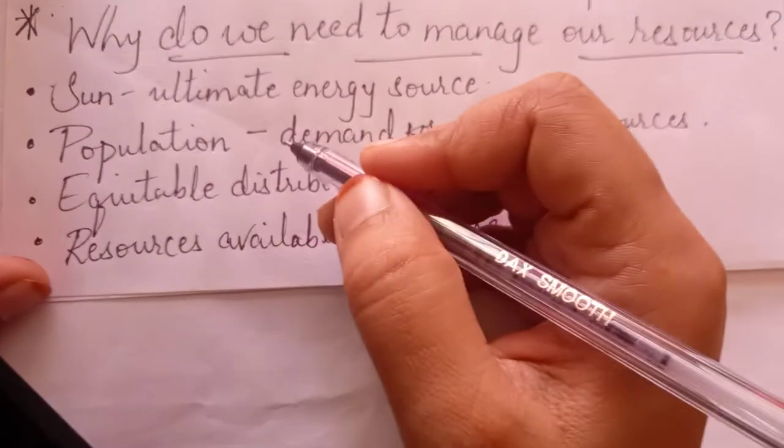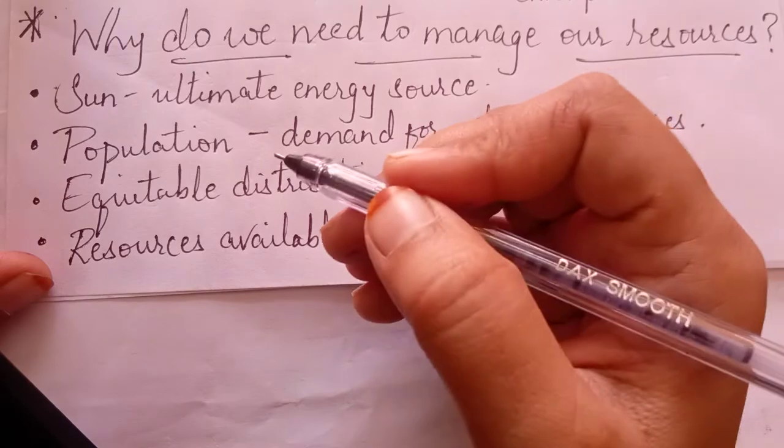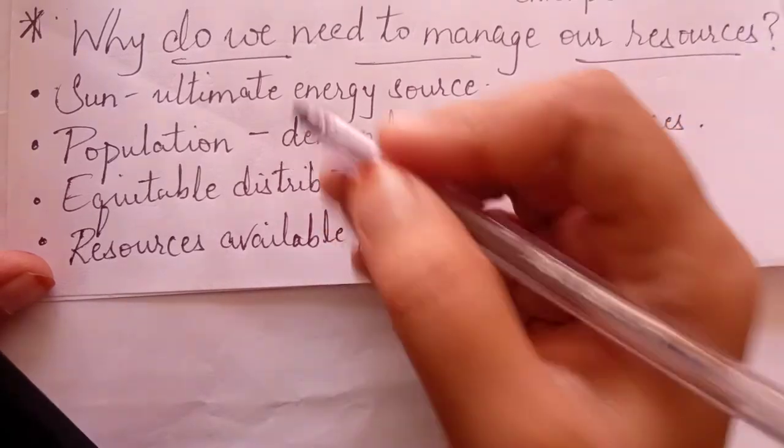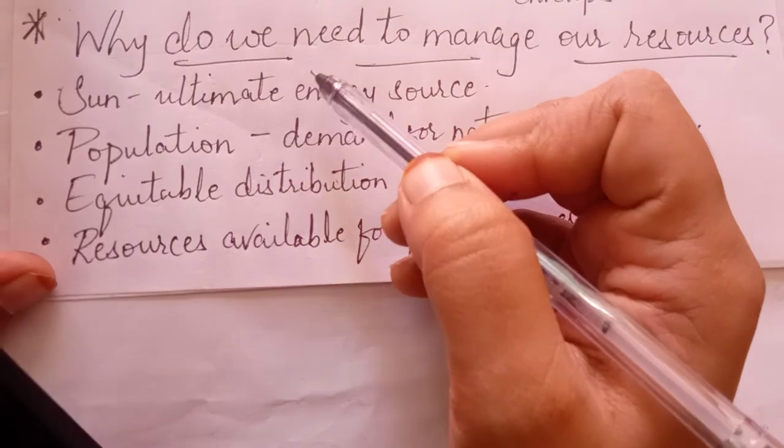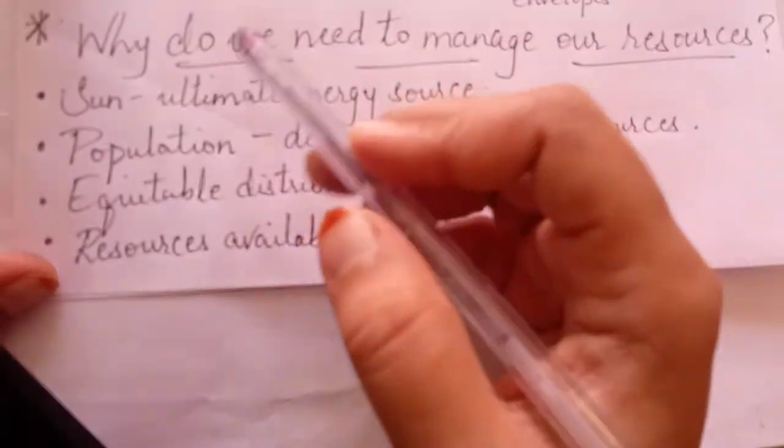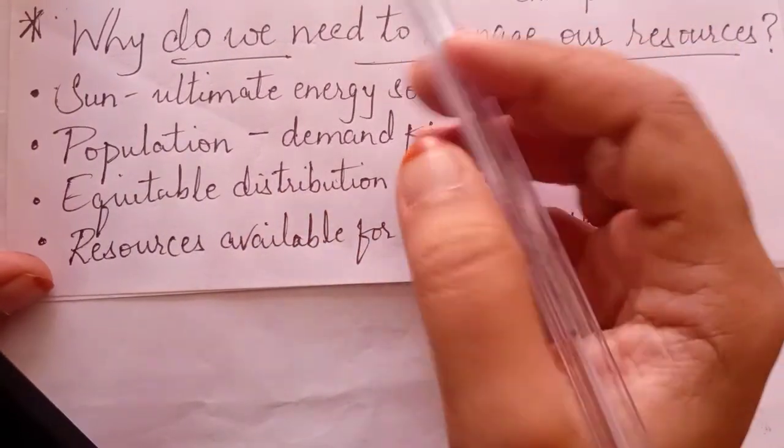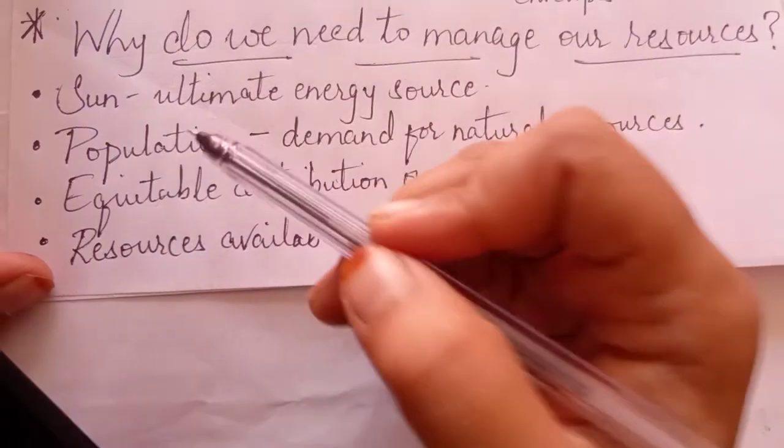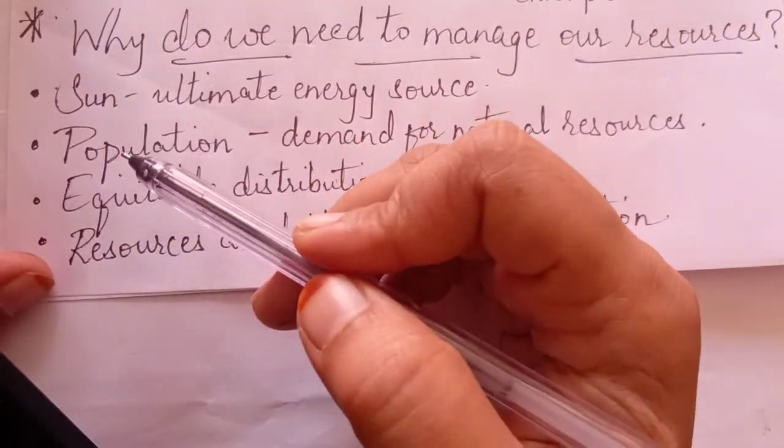But all these resources are again dependent upon the Sun, which is the ultimate source of energy on earth. Whether we may use it directly or indirectly, Sun is our only source of energy and all other resources depend upon the Sun.